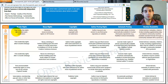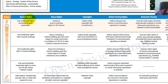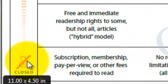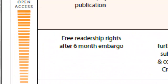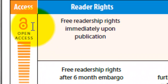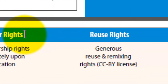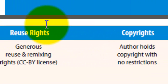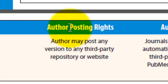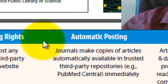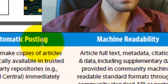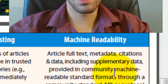The criteria on which we're going to judge the openness go from closed access to open access along different dimensions: reader's rights, reuse rights, copyrights, author posting rights, automatic posting, and machine readability.